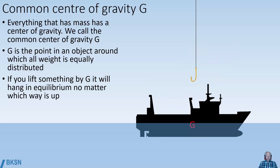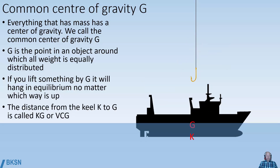Let's drop the boat down. The distance from the keel K up to the center of gravity G — the vertical distance — is called KG, that's the Norwegian abbreviation, or VCG, vertical center of gravity, the English abbreviation. We use both of them.